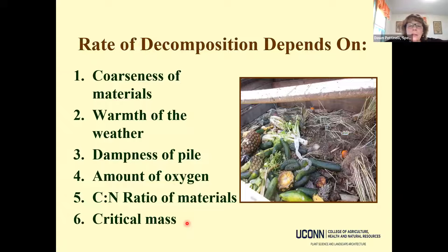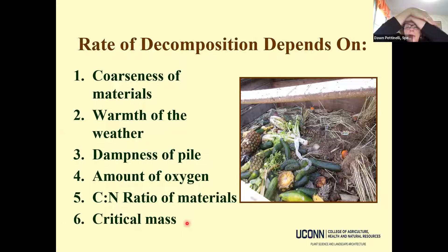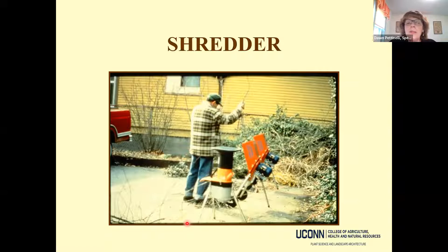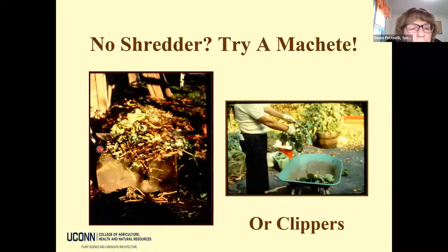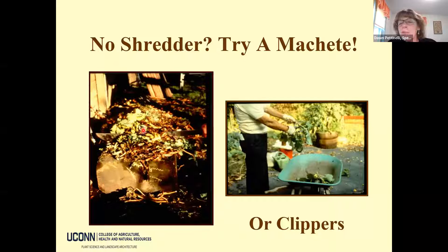When building your compost pile, think about location: put it somewhere accessible and near where you'll use it. Consider partial shade — a hot sunny site may dry out the pile and require more watering. For hot composting, you need that critical mass of at least four-by-four-by-four feet. If you're concerned about animal pests, choose a bin design that keeps animals out, such as turning bins with locking doors.